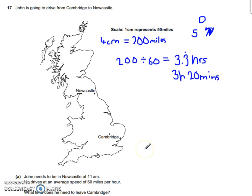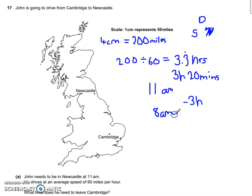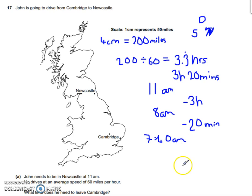Now to go from there — John needs to be in Newcastle at 11am, and we know it takes him 3 hours 20 minutes. To work out what time he needs to leave Cambridge, we start at 11am and go back 3 hours, which takes us back to 8am. Now we just need to take away the remaining 20 minutes. Take away 20 minutes and you get 7:40am. So the answer is 7:40am.